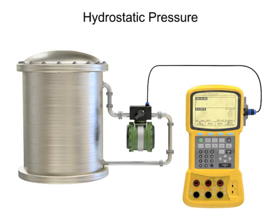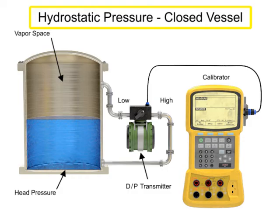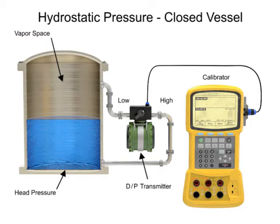Hydrostatic pressure can only be calculated from an open container. Within a closed or pressurized vessel, the vapor space above the column of material adds pressure and results in inaccurate calculated values. The vessel pressure can be compensated for by using a differential pressure transmitter.